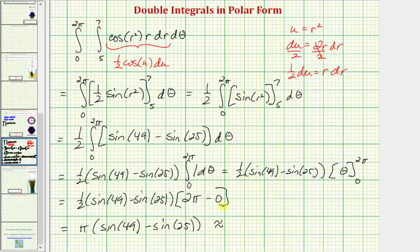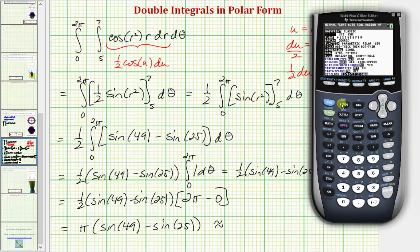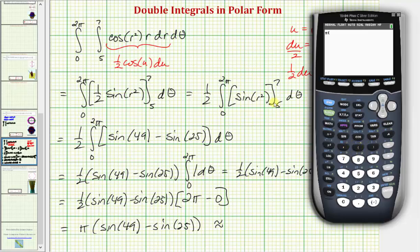Let's also get a decimal approximation for this value. We do want to make sure that we are in radian mode, which we are, so back to the home screen. So we'll enter pi, open parenthesis, sine 49, close parenthesis, minus sine 25, close parenthesis, and enter. And we get approximately negative 2.5805.